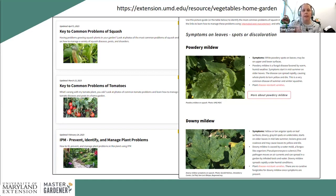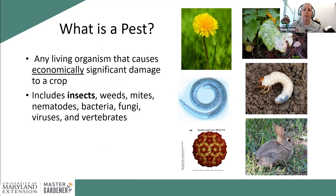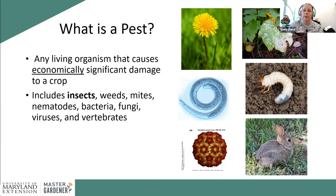If you start to feel overwhelmed or I'm moving too quickly, please ask questions — all this information is available on our website. When it comes to pests, I always like people to step back and ask: what is it? Garden pests are living organisms that cause economical or aesthetical damage — significant damage. A dandelion in your turf grass isn't causing physical harm, so not everyone would call it a pest.